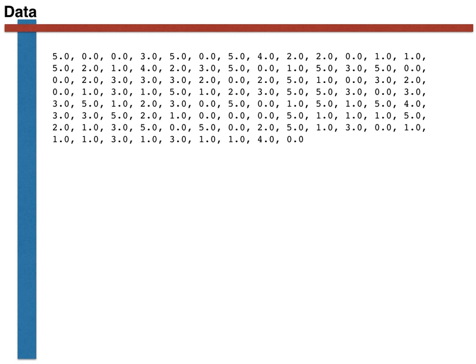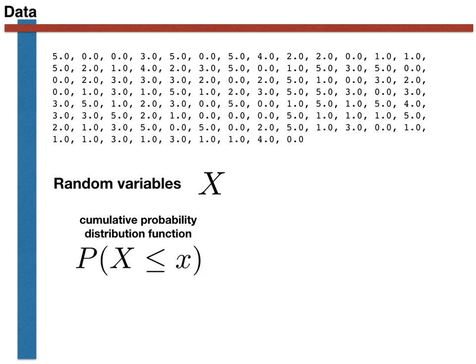We make the connection between the data that we extract from experiments and probability theory by stating that each one of these data points is a random variable. Furthermore, we denote these random variables using capital letters like the capital X shown here. We have seen over the last few weeks that these random variables always have a cumulative probability distribution function which tells us the probability that the random variable capital X is less than or equal to some particular value small x.